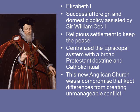Elizabeth I became the new queen when Mary I passed away. She had a very successful foreign and domestic policy, assisted by Sir William Cecil. They established what's called the Religious Settlement, which kept the peace in England. It was a centralized, episcopal church system — basically the Catholic structure — with a broad Protestant doctrine but maintaining Catholic ritual, which pleased many people. This new Anglican church was a compromise that kept the differences between Protestants and Catholics from creating unmanageable conflict, and kept a lid on protest as much as possible.